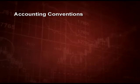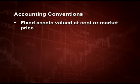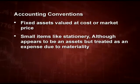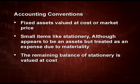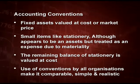Current means the latest market position — it is not shown because we are recording on the historical cost, the cost at which we acquired our assets. Next point: accounting conventions. Fixed assets are always valued at cost or market price. This convention is followed so that we record on historical cost and there is no change of inflation in the accounts. Small items like stationery, although they appear to be an asset, are treated as an expense due to the concept of materiality. Whatever is material has to be recorded, and whatever is immaterial is shown as an expense or not recorded at all. But the remaining balance of stationery at the end will be valued at cost.